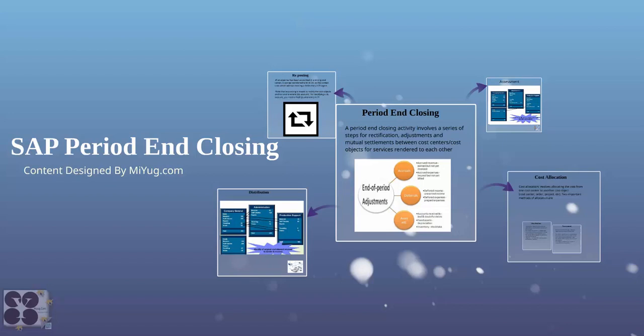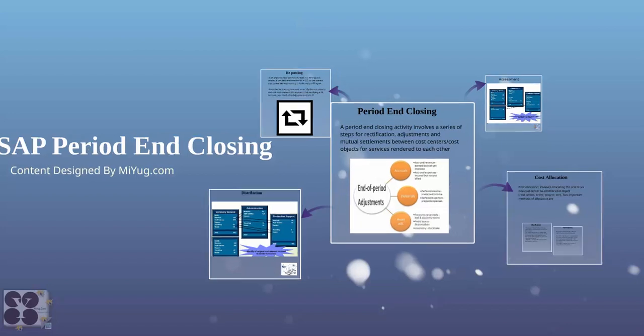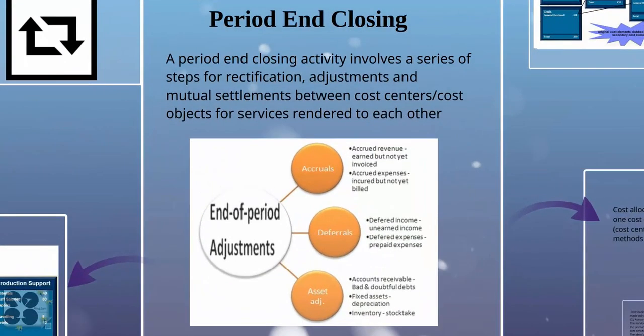Period and Closing. This activity involves a series of steps for recertification, adjustment, and mutual settlements between cost centers and cost objects for services rendered to each other. At each period end — for example, if it is monthly — every month we end our books and adjust.